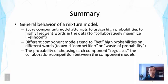First, every component model attempts to assign high probabilities to high frequency words in the data, and this is to collaboratively maximize likelihood. Second, different component models tend to bet high probabilities on different words, and this is to avoid competition or waste of probability, and this would allow them to collaborate more efficiently to maximize the likelihood.